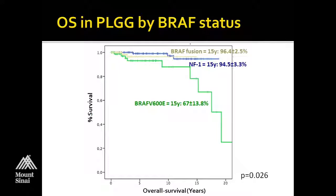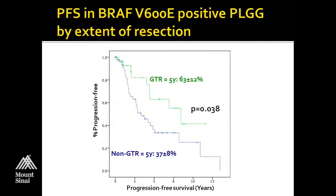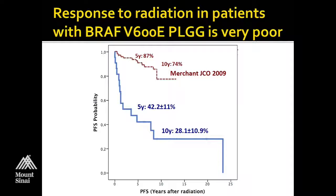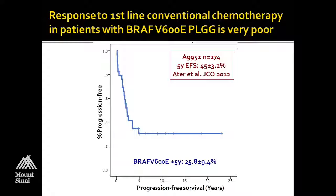From a clinical perspective, it's important to identify these patients because they don't respond the same way to current therapies. BRAF V600E patients who had a gross total resection do a little better than those who didn't, but overall progression-free survival is still not great. Their response to radiation is not as good either — we would expect about 75% progression-free survival at 10 years for low-grade glioma treated with radiation, but we only see 28% for V600E patients. Same with traditional chemotherapy: expected five-year progression-free survival is 45%, but we're down at 25% for V600E patients.